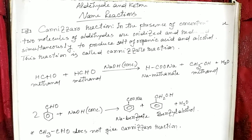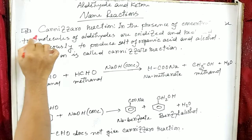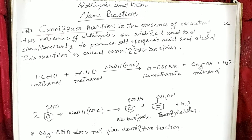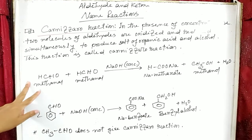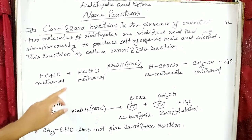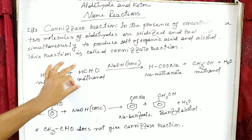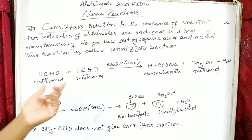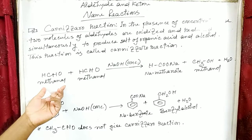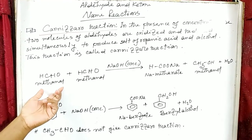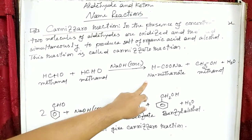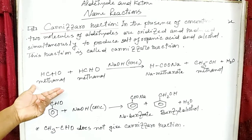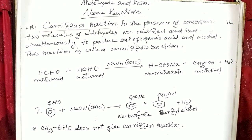Now my dear students, look at the whiteboard — we are going to discuss the Cannizzaro reaction. I would like to start with an example: methanol. If you observe the structural formula of methanol, you will see there is no alpha carbon. So in the presence of concentrated sodium hydroxide, two molecules of aldehyde having no hydrogen at the alpha carbon react together. The first aldehyde molecule is oxidized to produce an organic acid.